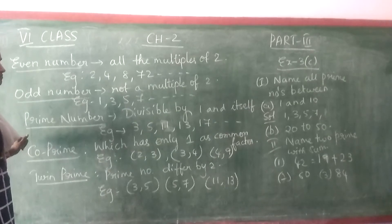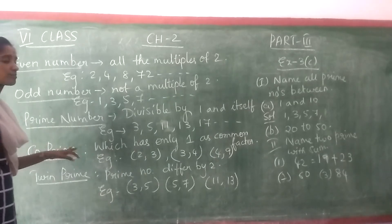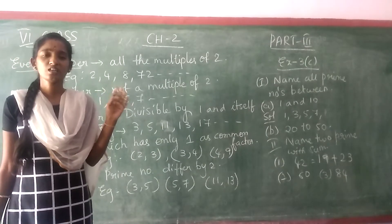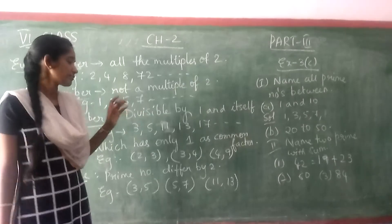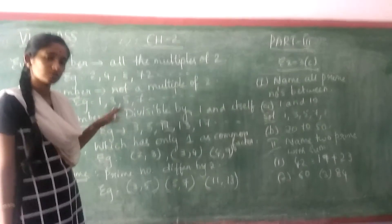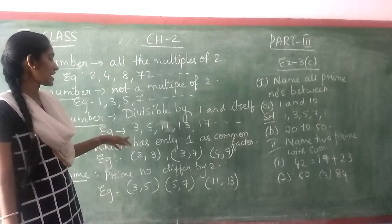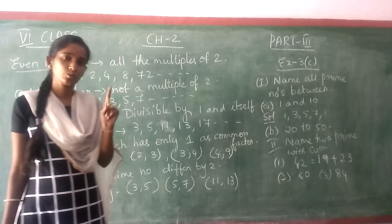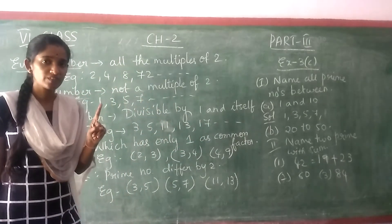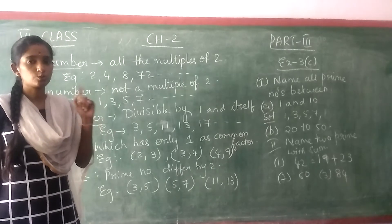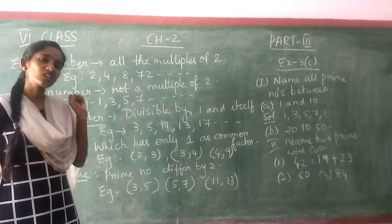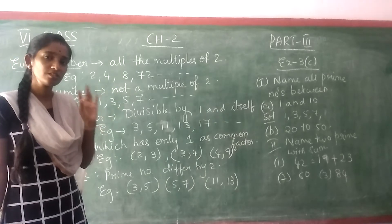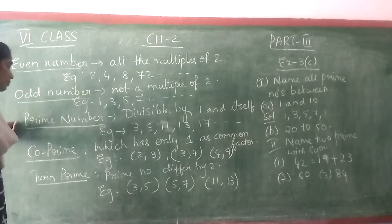Now coming to co-prime. Co-prime means with any 2 natural numbers you can take — suppose 3, 4, 5, 6, 7, 8 — which is having only 1 as a common factor. Any numbers you take, we will have 1 as a common factor. That is called a co-prime.